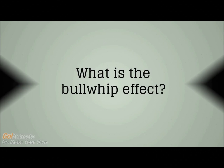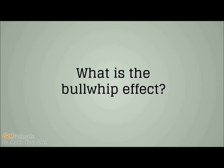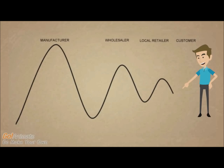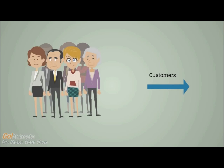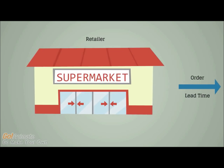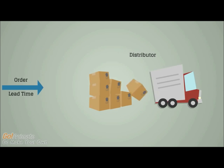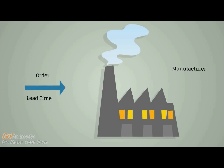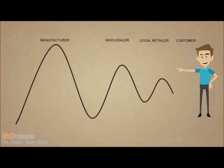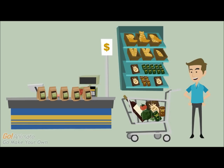What is the bullwhip effect? It is the ripple effect where small changes in customer demand are magnified upstream through a supply chain — all the way from the customers to the retailer, to the distributor, to the manufacturer. So named because of the resemblance to a bullwhip, as the variability of demand increases sharply when you progress up the supply chain.